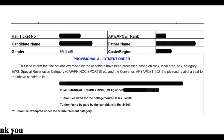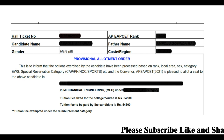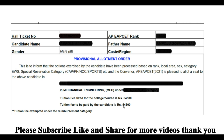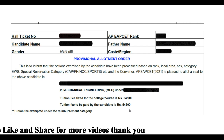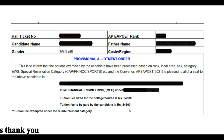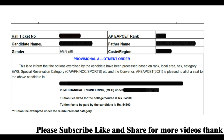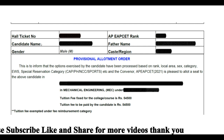One example: the certificate number, rank, candidate name, father name, and appointment order. The college fee here is ₹54,500, and the tuition fee to be paid by the candidate is ₹54,500. There are reasons for this — if you have no fees, the fee to be paid by the candidate would be zero, with no interest and no money paid by the candidate. If you are eligible, there is no fee to be paid in college.